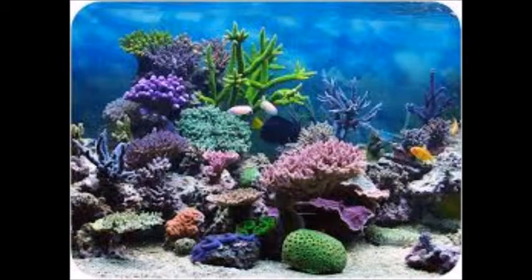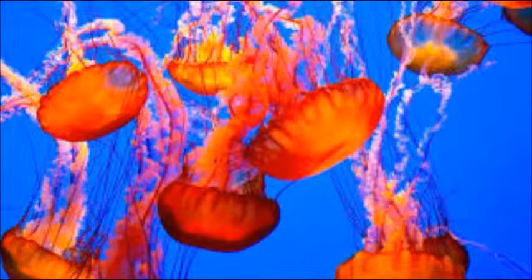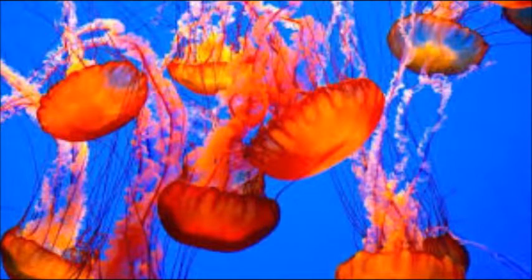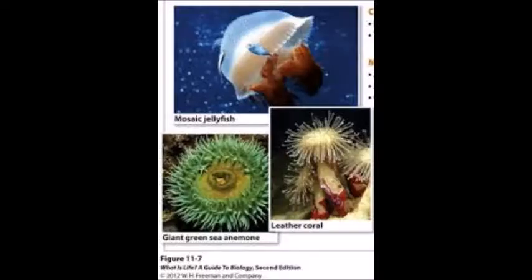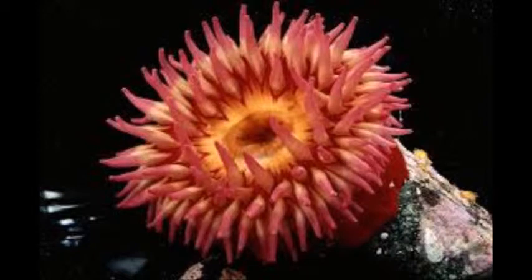And like Porifera, they contain tissues. There is something very different about their digestive cavities — as far as we know, there's only one opening, meaning that they eat and expel waste through the same place, which is their mouth. Very unusual to us, but regardless, let's continue.